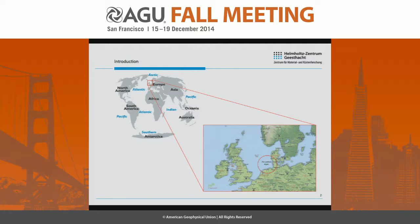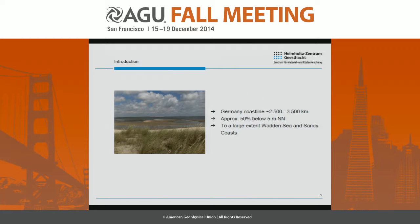To briefly make you familiar with the region, I'm going to talk about basically the North Sea, which is on the European continental shelf, and here specifically about the German North Sea coast in the southeastern part of the North Sea within the German Bight. The German coastline is about 2,500 to 3,500 kilometers long, depending on how detailed you are looking at. About 50% of the German coast are below 5 meters above mean sea level.